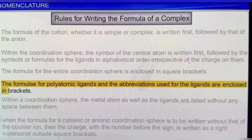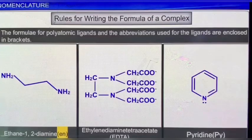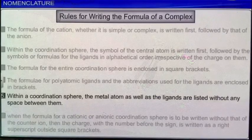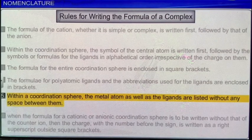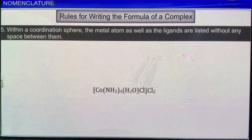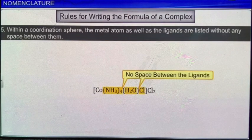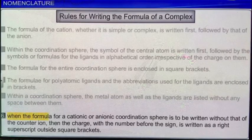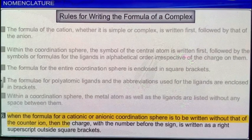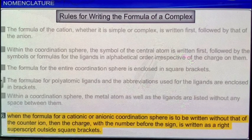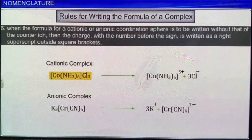In the complex of cobalt shown here, the coordination entity contains the polyatomic ammonia ligand and the abbreviated ethane-1,2-diamine ligand. Within a coordination sphere, the metal atom as well as the ligands are listed without any space between them. When the formula for a cationic or anionic coordination sphere is to be written without that of the counter ion, the charge with the number before the sign is written as a right superscript outside the square brackets. For example, the complex ions of cobalt and chromium with the charge of the respective ions are shown here.